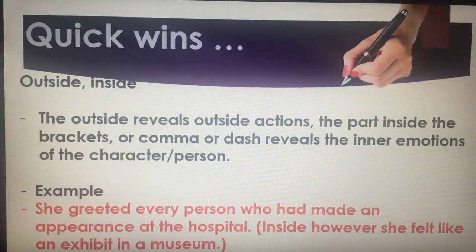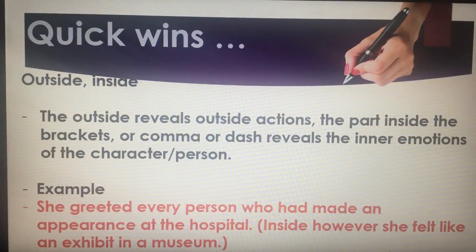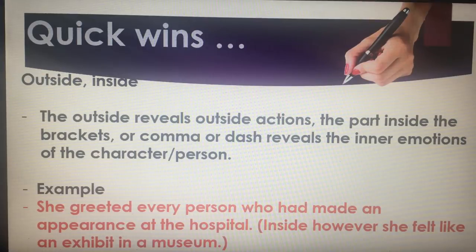Outside and inside — again from Alan Peat's exciting sentences. The outside reveals an outside action, but the part inside the brackets, commas, or dash reveals the inner emotions. That's a good way to show outwardly what someone's doing versus inwardly. Quick example: 'She greeted every person who had made an appearance at the hospital. Inside, however, she felt like an exhibit in a museum.' You've got that juxtaposition of what's being shown on the outside versus how the character actually feels.